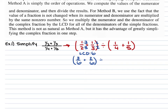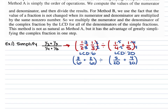For the second fraction, your least common denominator between the 4 and the 5 is 20. So we multiply the first fraction top and bottom by 5, and the second fraction top and bottom by 4. This gives us 5/20 plus 4/20. Simplifying inside the parentheses: 3/6 plus 2/6 is 5/6, and 5/20 plus 4/20 gives us 9/20.